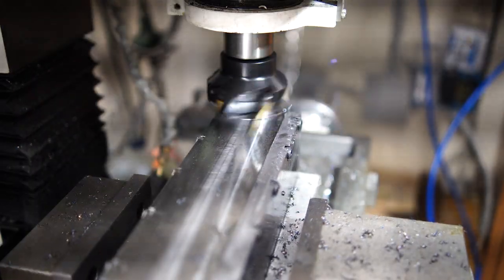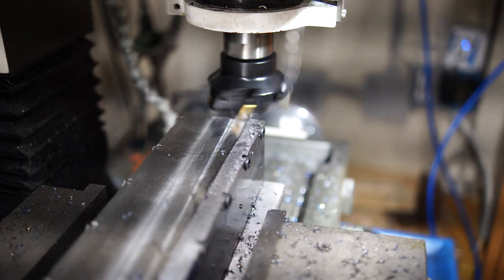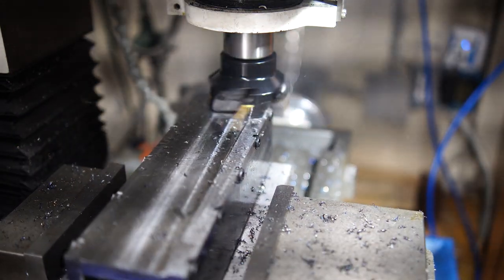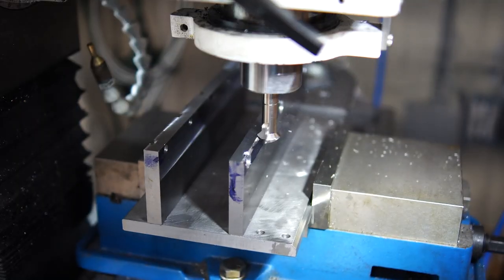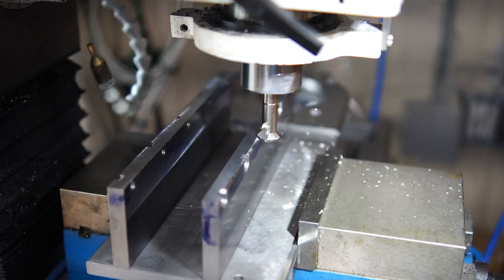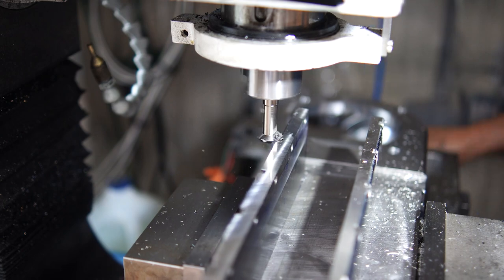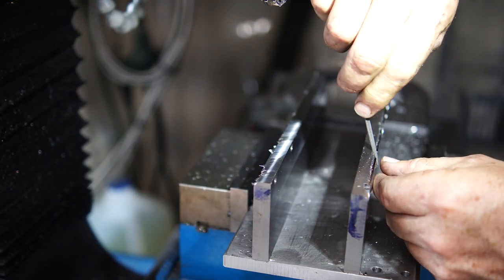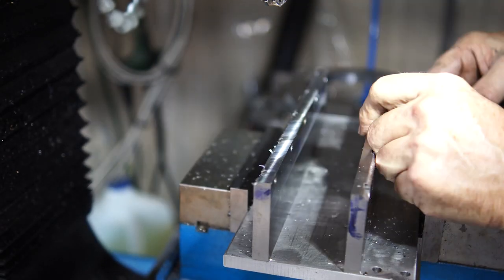In the drill press I put a light chamfer on all those tapped holes. Then I assembled the entire thing so that I could face mill it all as one piece to get it nice and smooth. I took it apart and used the 45 degree chamfer to chamfer the edges of the upright pieces.